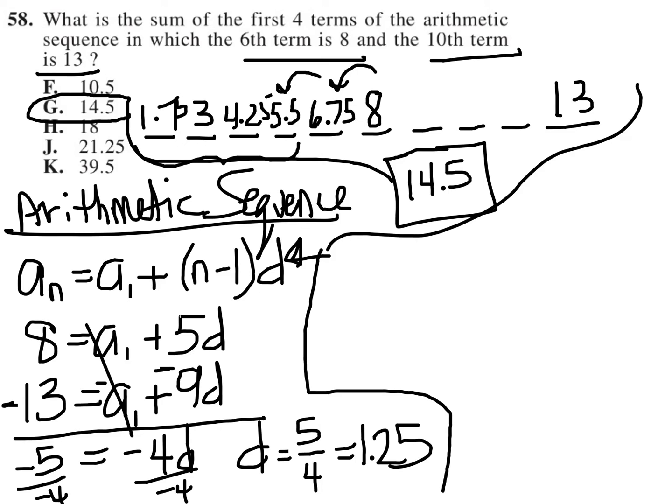is to start by making a sequence of underlines to represent the positions 1 through 10 for each number. And again, I'm going to place in what the question gives me, so that's 13 at position 10, and 8 at position 6.